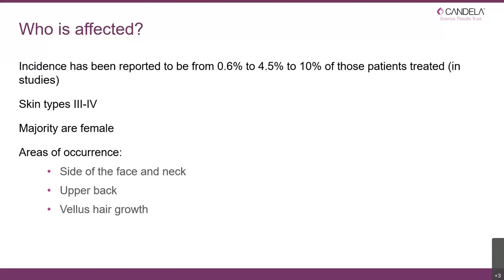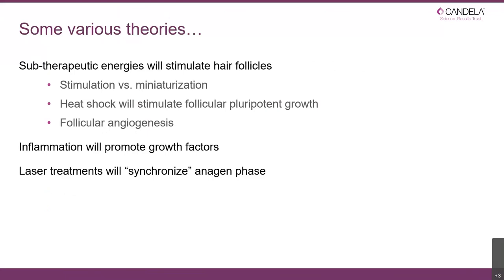You see paradoxical hair growth much more in skin type 4, definitely in skin type 5. The majority of cases are female — though that could be because the percentage of females having laser hair removal is much higher than men. You see it particularly on the side of the face, the neck, and particularly on the upper back and shoulders — those are the commonest places. Because it's an underreported condition, it's very difficult to come up with a definitive reason why it happens, so some of what follows is theoretical.